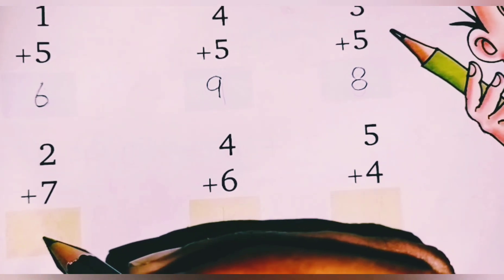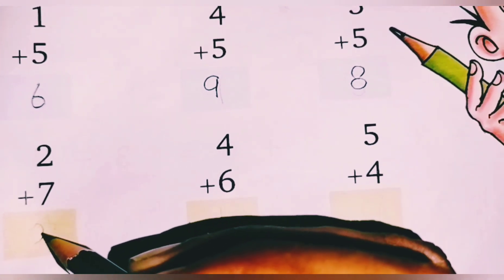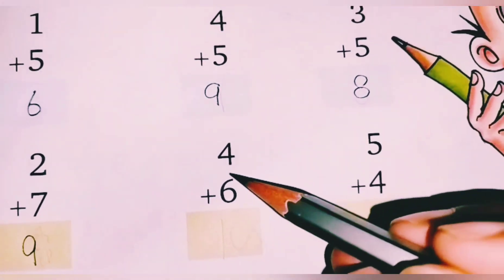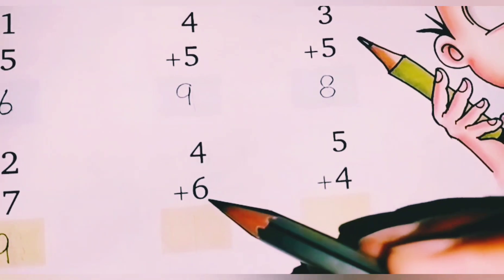2 plus 7 is 9. 2 plus 7 is 9. Okay, then the next number is 4, which number is 6.